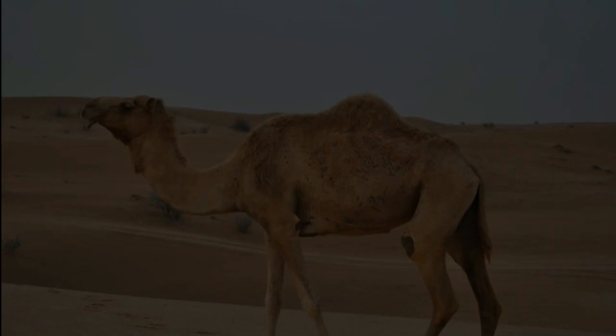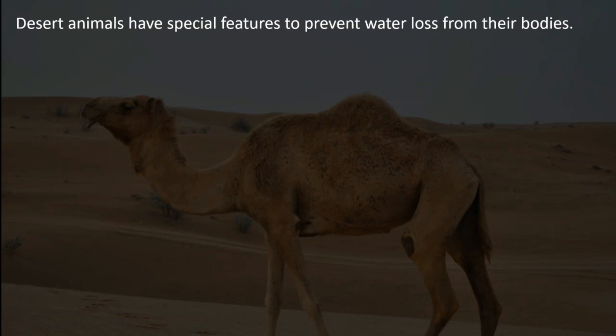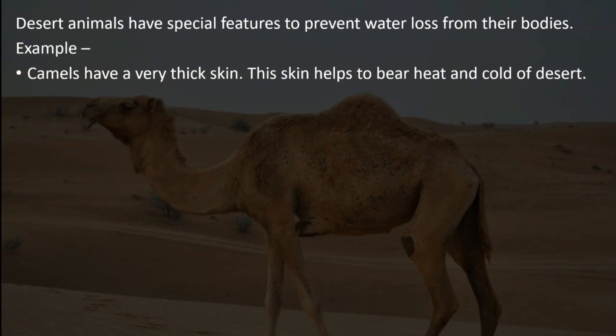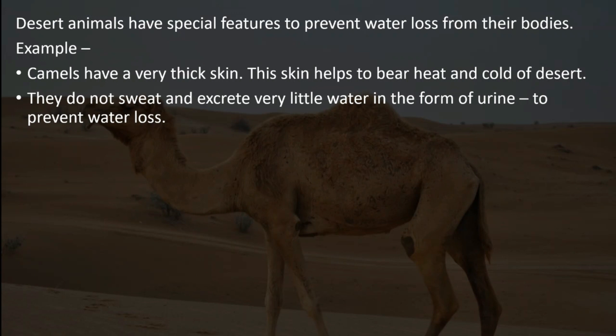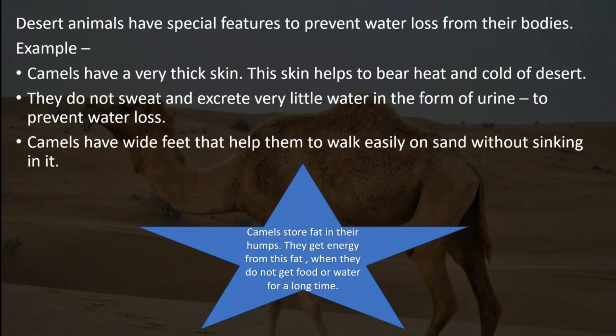Since deserts are very hot during daytime, desert animals have special features to prevent water loss from their bodies. Camels have a very thick skin. This skin helps to bear heat and cold of the desert. They do not sweat and excrete very little water in the form of urine to prevent water loss. Camels have wide feet that help them to walk easily on sand without sinking in it. Here is a fun fact: camels store fat in their humps. They get energy from this fat when they do not get food or water for a long time.